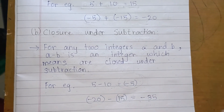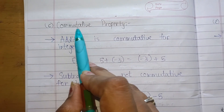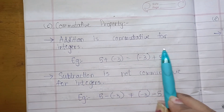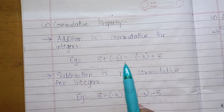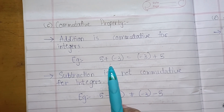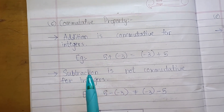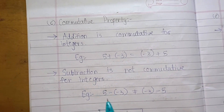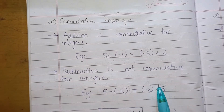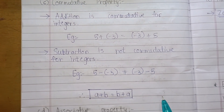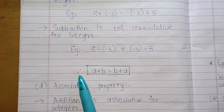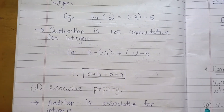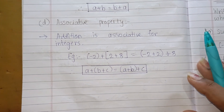Now the third property: Commutative Property. Addition is commutative for integers — whenever we add any two integers in any order, the answer is the same. However, subtraction is not commutative for integers — whenever we subtract two integers in any order, the answer is not always the same. Therefore, a plus b equals b plus a. Commutative property only applies to addition.